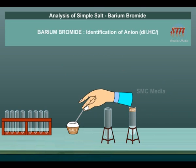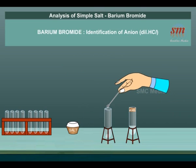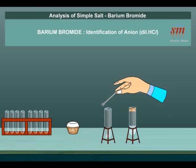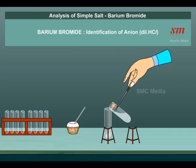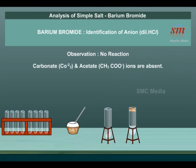Identification of Anion — Action of Dilute HCl: A small quantity of salt is taken in a dry test tube and dilute HCl is added. No reaction. Inference: Carbonate (CO₃²⁻) and acetate (CH₃COO⁻) ions are absent.